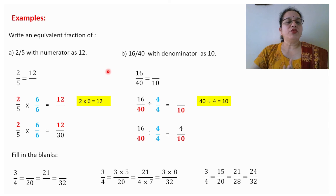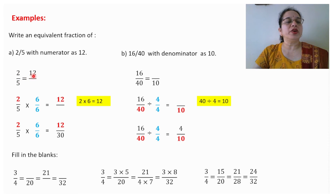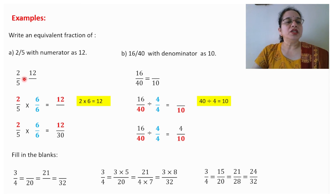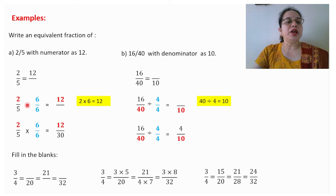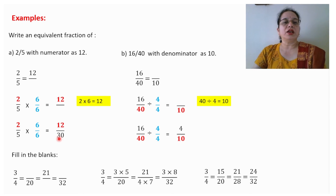Now write an equivalent fraction of 2/5 with numerator 12. Convert this as: 2/5 = 12/? — you need to find the denominator. What is the relation between 2 and 12? If you multiply 2 by 6 you get 12. So multiply by 6/6: 2 × 6 = 12, and 5 × 6 = 30. Your final answer will be 30.